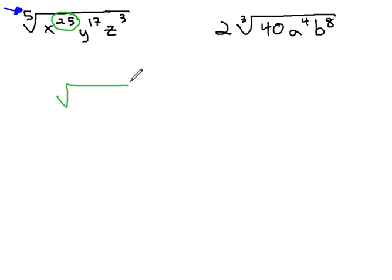For the x's, 25 divided by 5 is 5, so we have x to the 5th outside the radical. There's no remainder, so no x's remain inside the radical.